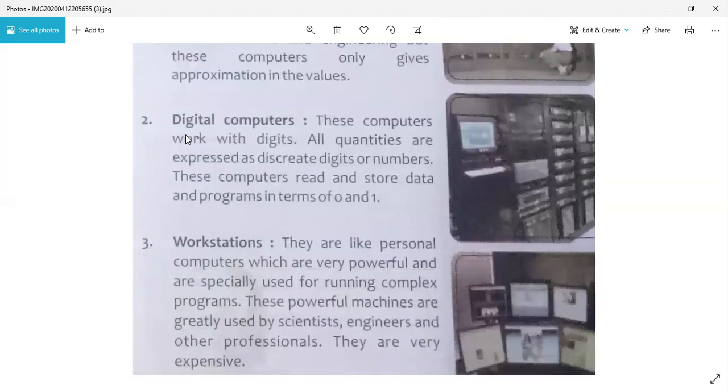Next, digital computer. These computers work with digits. All quantities are expressed as discrete digits or numbers. These computers read and store data and programs in terms of 0 and 1. When we are saving, they are saved as 0 and 1.